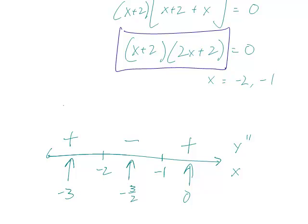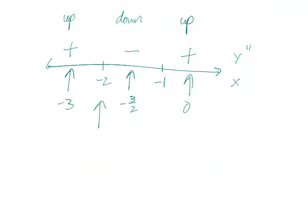So it's concave up here, down here, and up here. And so these are both inflection points because the concavity changes at both those points. So now we can write down the answer.